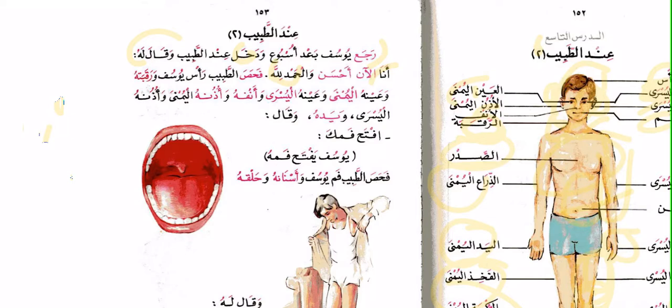فحص الطبيب رأس يوسف ورقبته — the doctor inspected the head of Yusuf and his neck. وعينه اليمنى and his right eye, وعينه اليسرى and his left eye, وأنفه and his nose, وأذنه اليمنى and his right ear, وأذنه اليسرى and his left ear, ويده and his hand. وقال: افتح فمك — open your mouth. افتح is the command form from فتح.